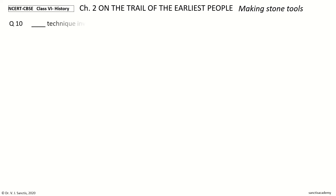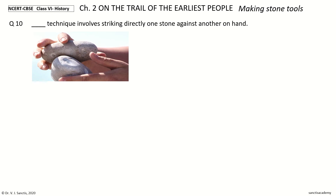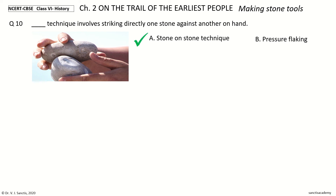Question 10: Dash technique involves striking directly one stone against another in hand. The options are: stone on stone technique, pressure flaking. And the answer is stone on stone technique.